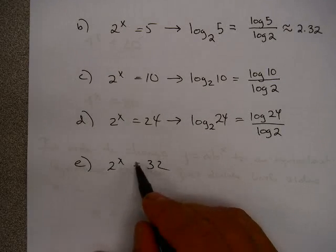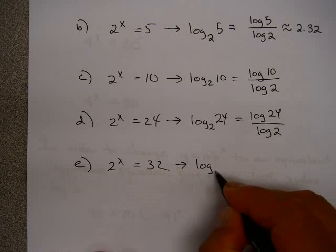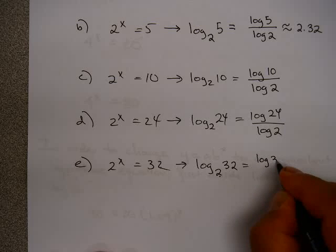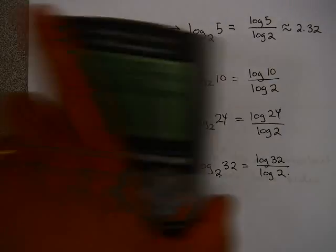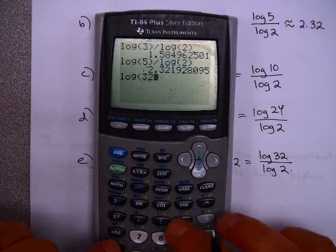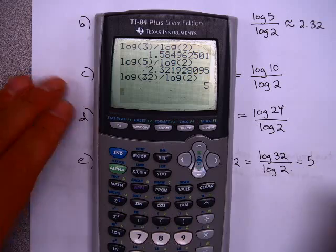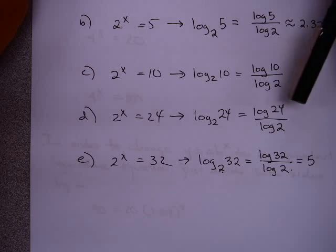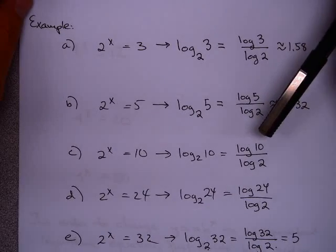Even the earlier problem 2^x = 32, which we solved and got the answer 5, can be verified with the change of base formula. That's log base 2 of 32, so we compute log(32) / log(2) using the calculator, and that gives exactly 5 — the same answer as before. This confirms the change of base formula is extremely useful for solving exponential equations.